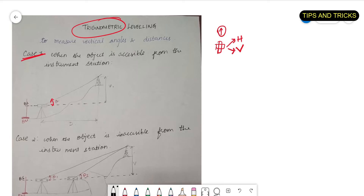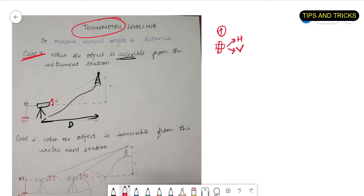In Case 1, our object is accessible from the instrument station. Say this is my tower and I need to find the RL of this tower. I am setting up my instrument station here and this path is accessible, so I can go and find out the distance d between my station and the tower. I am setting my instrument near the benchmark — where I already know the RL — say this RL is 100 meters.